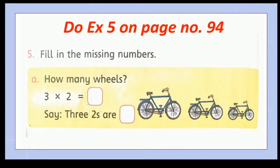Exercise five, fill in the missing number. Part A, how many wheels? There are how many bicycles? One, two, three bicycles. Three bicycles, there are three bicycles. Each bicycle has two wheels, and how many wheels are three bicycles? Three times two is six, or three twos are six.